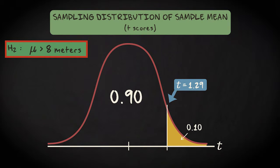Now, our test statistic is located within the rejection region, so in this case we do reject our null hypothesis. And we conclude that the population mean is indeed larger than 8.